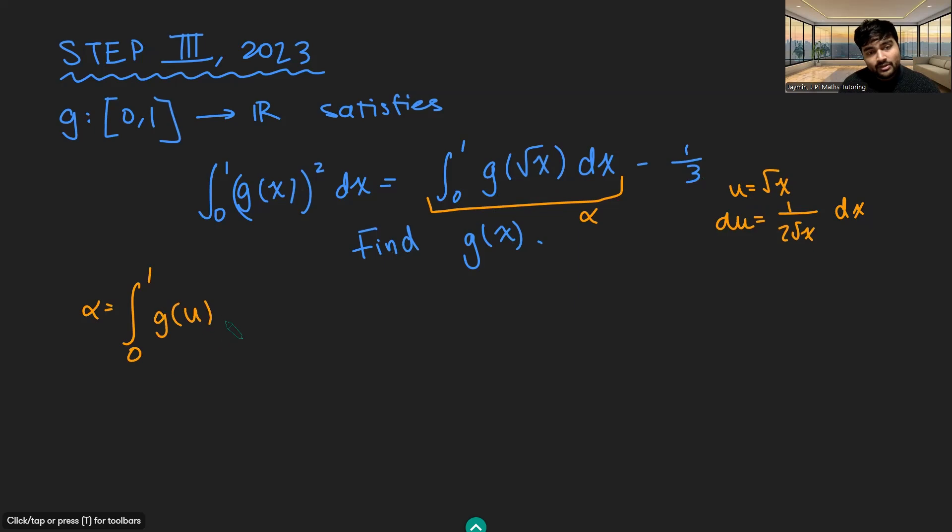Now, g(√x) is just going to be g(u). And then dx here, if you rearrange this, will become 2√x du. What is √x? √x is just u. So this is g(u) times 2u du.